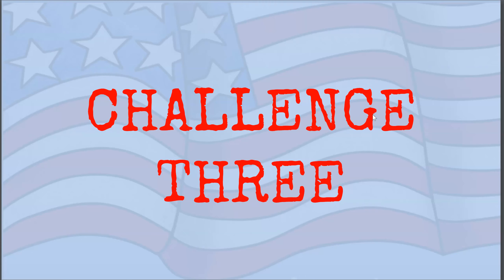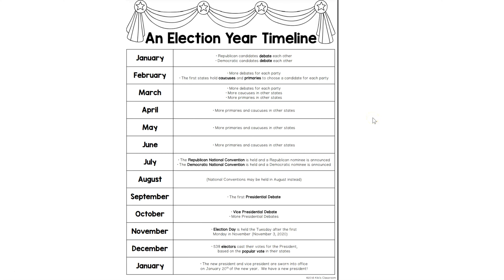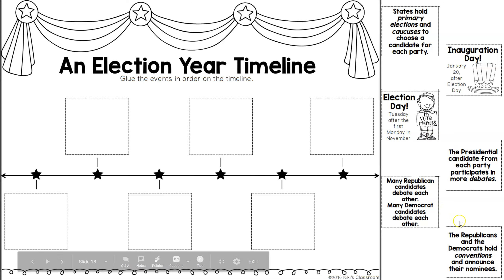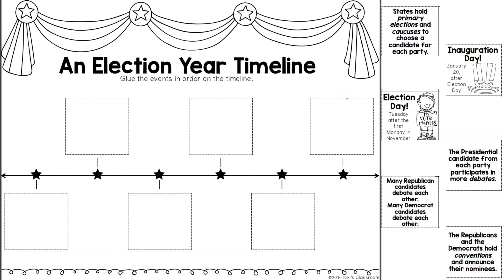The last challenge you can choose from is challenge three. You will review an election year timeline and then order events by clicking and dragging each of the boxes into the correct spot. Make sure you go back and refer to the text to help you if you're stuck. Boys and girls, I hope you have fun choosing one of your challenge activities.